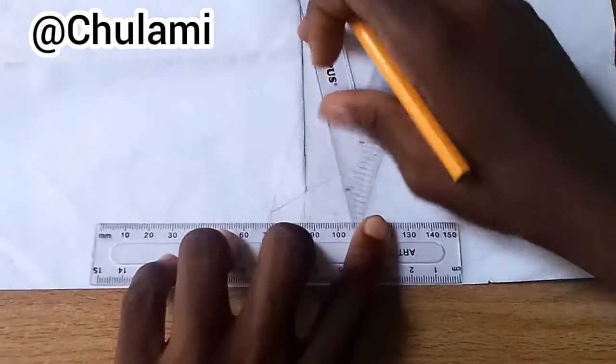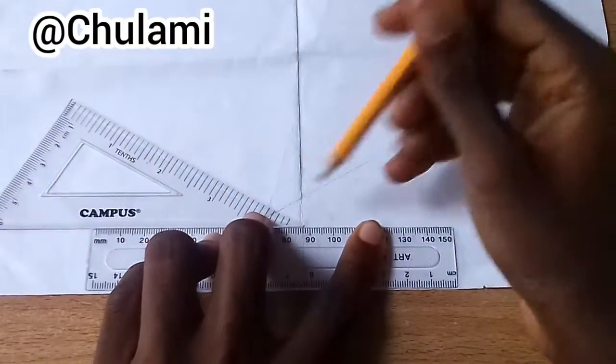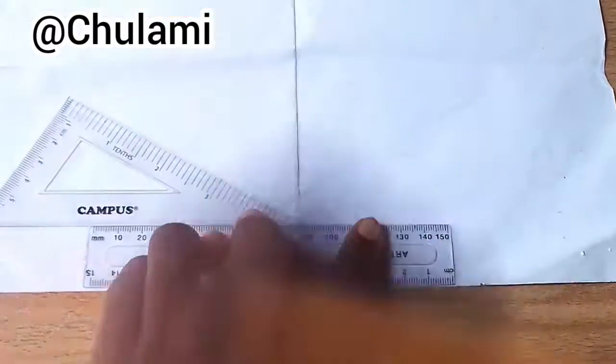Okay, and then turn it this way, and then we draw a front line. Okay, now having done that, now it's time for us to draw the block itself.